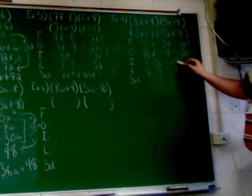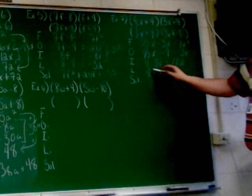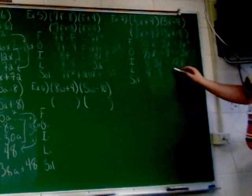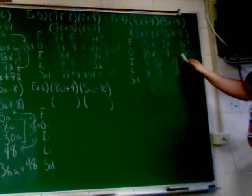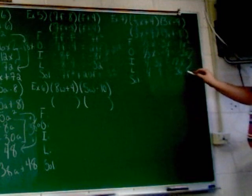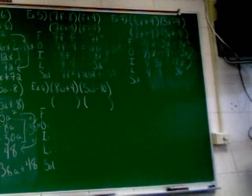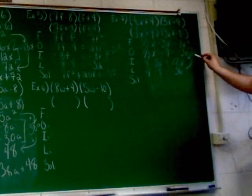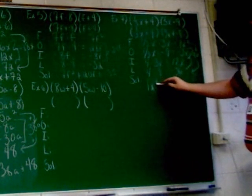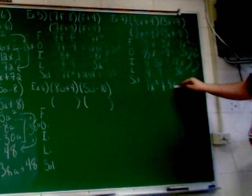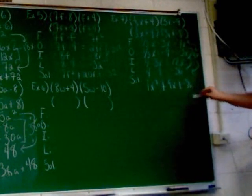4 times 3X is 12X. Negative 9 and 4 make negative 36. Now, once again, these outers and inners can go together. Negative 3X and 12X make 9X. And then you just run the parts together. 1X squared plus 9X plus negative 36.